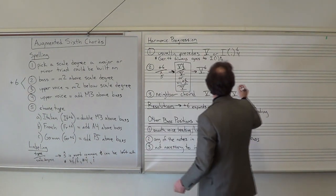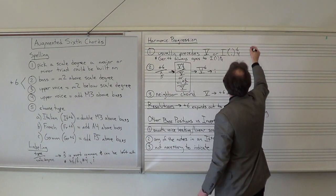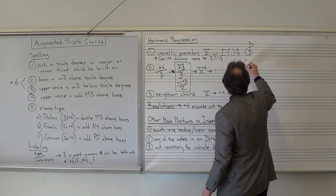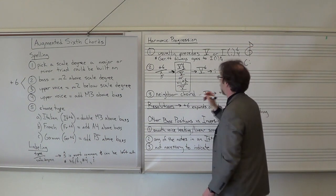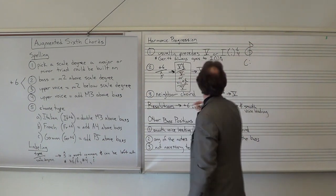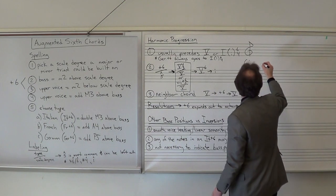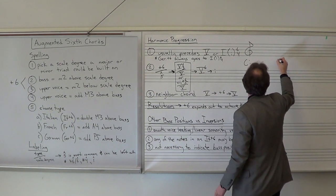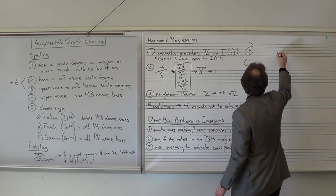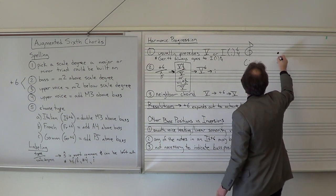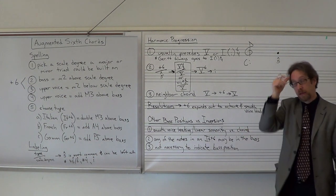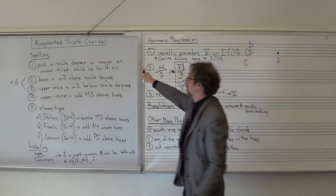Let's pick the key of C major, and we'll pick scale degree 5. Scale degree 5 is a G. I'm going to write a G here and indicate that that's scale degree 5. That is step 1.